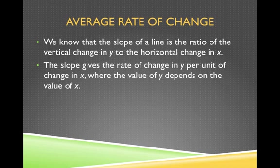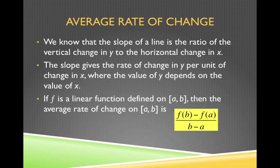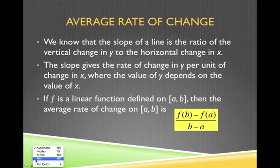The slope of a line is the ratio of the vertical change in y to the horizontal change in x — giving the rate of change in y per unit of change in x. Instead of just thinking about two points x1, y1 and x2, y2, a linear function can be defined on some interval. We can talk about the average rate of change on this interval as the change in the function divided by the change in x. The values on the x-axis define the interval, and f of x gives the y values — there's no difference from the rise over run formula.